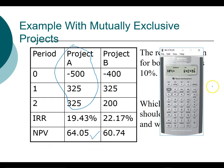To compute the internal rate of return, we can just press IRR and compute, since our cash flows are already entered. The internal rate of return is 19.43%.